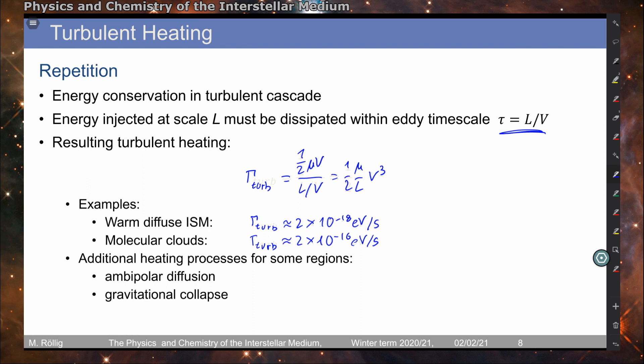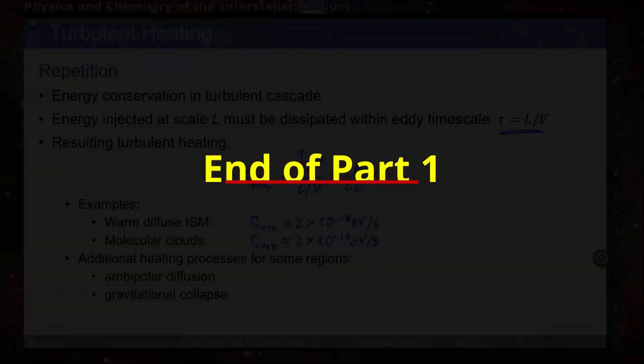There are also additional heating processes for some regions. For example, we saw that we can have ambipolar diffusion — when the ions and the neutral parts of the gas can move with respect to each other, collisions of these will also inject energy and heat the gas. We can have gravitational collapse, and then the release of potential energy will also heat the gas.